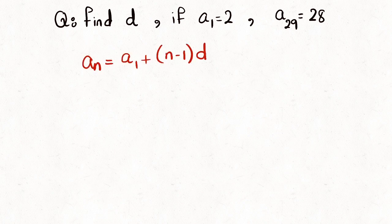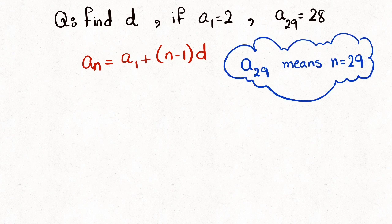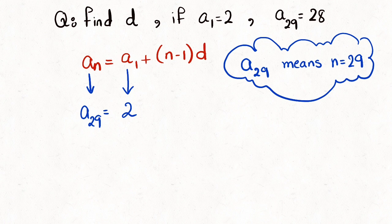Write the nth term formula. Since a29 means n equals 29, replace the values as they appear and solve the equation to find d.